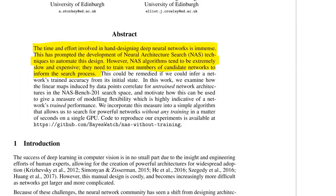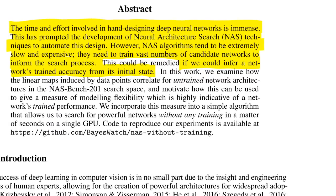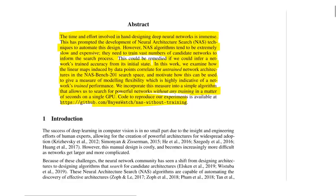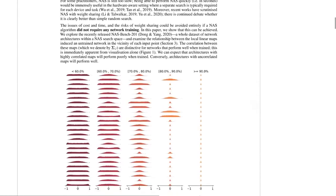They go for a different solution. This could be remedied if we could infer a network's trained accuracy from its initial state. In this work, they examine how the linear maps induced by data points correlate for untrained network architectures in the NAS-Bench-201 search space, and use this as a measure of modeling flexibility that is highly indicative of a network's trained performance — allowing them to search for powerful networks without any training in seconds on a single GPU.